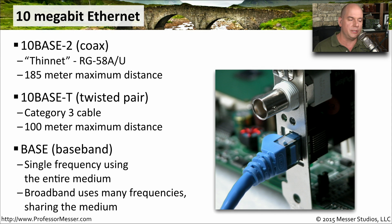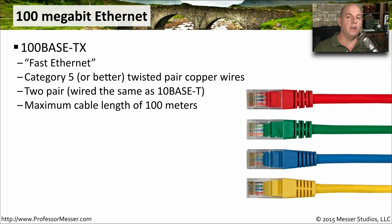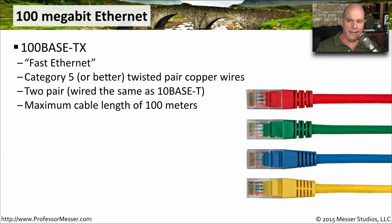Most of the Ethernet standards you will see will have that "baseband" or "base" in the name. The next major upgrade to Ethernet moved us from 10 megabits per second to 100 megabits per second — 10 times faster. One of the more popular standards was 100BaseTX, which we called Fast Ethernet. It ran over Category 5 or better twisted pair. Devices in a small office or home office might be running 100BaseTX. It uses two pairs, is wired the same way as 10BaseT, and has a maximum length of 100 meters.